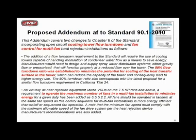Regarding ASHRAE 90.1 2010: an addendum was issued, passed, and approved — it is part of both ASHRAE 90.1 2010 and 90.1 2013. It states in red that a 50% flow turn down ratio is the minimum. So if you specify that your towers be ASHRAE 90.1 2010 compliant, you will get 50% turn down. I would suggest including that in your guide specifications — it's a simple but important requirement.